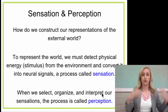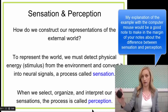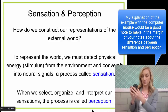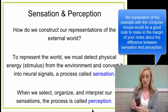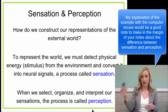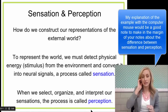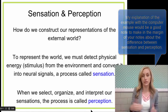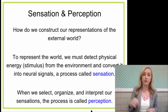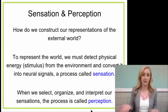But how do we construct our representations of the external world? If I'm looking at my computer mouse here, how is this physically, as I'm holding it, as I'm looking at it, represented in my brain to a point that I can recognize it as a computer mouse? To represent the world, we have to detect the physical energy or stimulus from our environment and convert it into neural signals — and that is sensation.